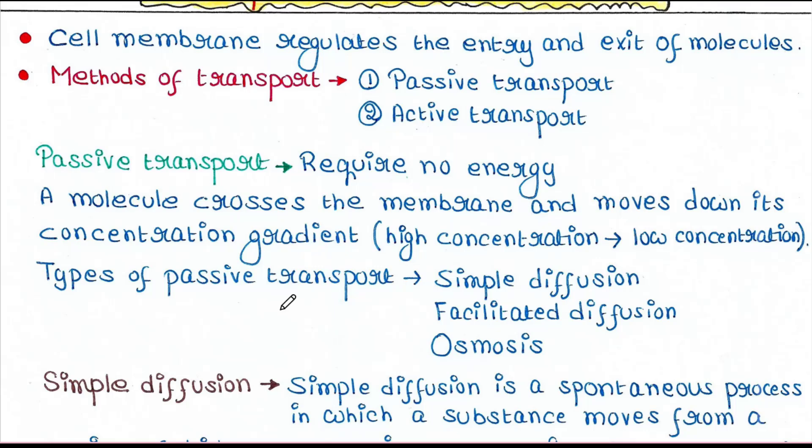There are three types of passive transport: simple diffusion, facilitated diffusion, and osmosis.